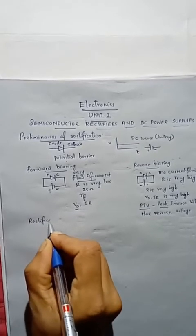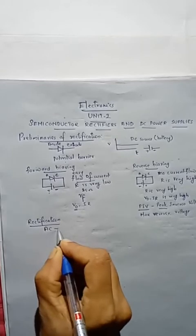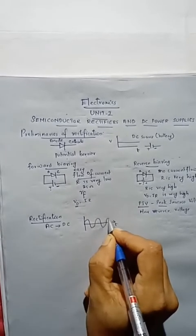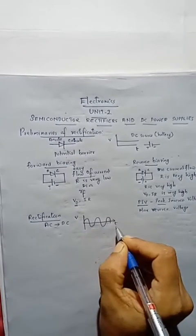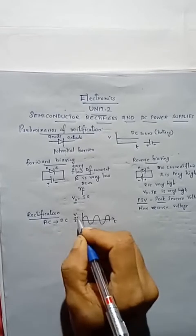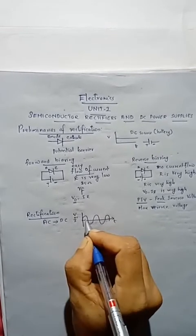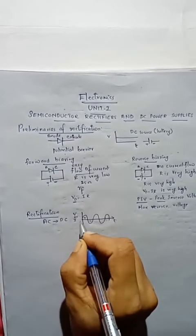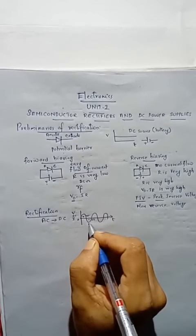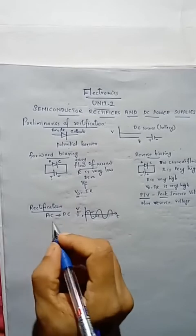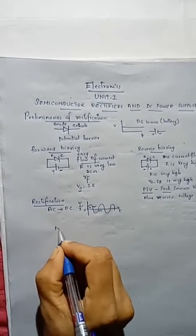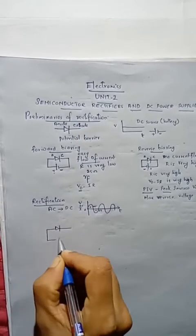Now we can come to the case of rectification. Rectification, in the simplest case, is the conversion of AC into DC. An AC supply, represented diagrammatically, has time on the x-axis and voltage or current on the y-axis. The AC voltage contains positive variations from 0 to pi and negative variations from pi to 2pi. In order to convert AC into DC, we can use the property of the diode.